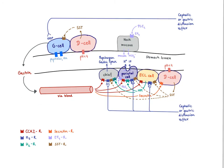Another mediator that inhibits acid secretion is prostaglandin E2. This acts on the EP4 receptor and inhibits acid secretion. The dashed arrow here is a reminder that this is an inhibitory signal.